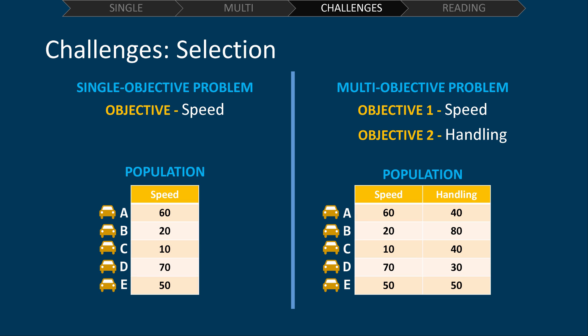Let's compare two populations of solutions. One to a single objective problem and one to a multi-objective problem. Our single objective problem will be looking for a vehicle with only the fastest speed. Our multi-objective problem will be looking for a vehicle with the fastest speed and the best handling.